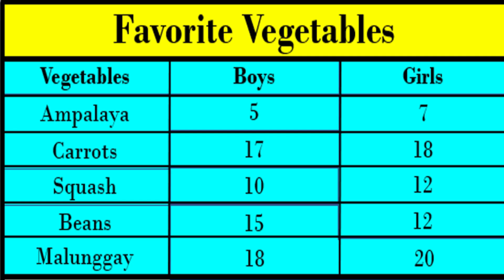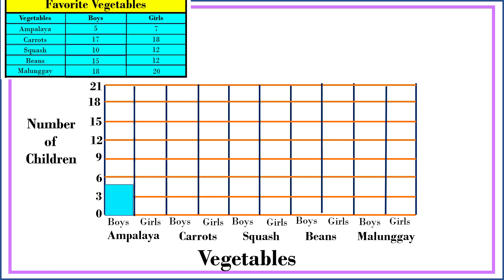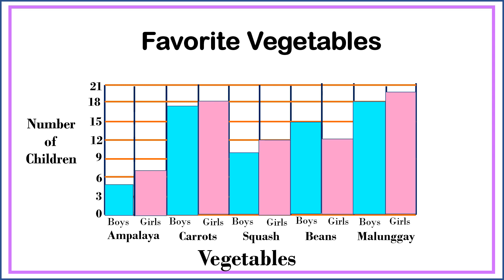As we see in the table, each vegetable divided the votes for boys and girls. So let's divide each vegetable for boys and girls. Then, we're going to plot the points from the table into our graph. Don't forget to put a title in the graph and the legend. This is the way how we're going to draw a double vertical bar graph.